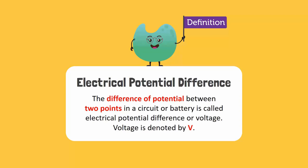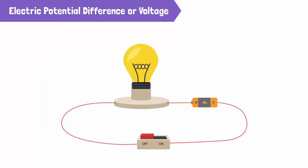Voltage is denoted by V. This potential difference causes the electrons to move through the wire. Here, the two points refer to the positive and negative terminals of the battery.